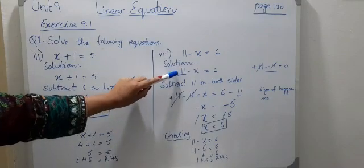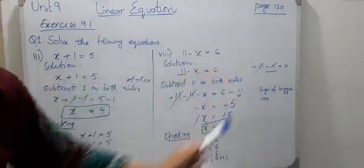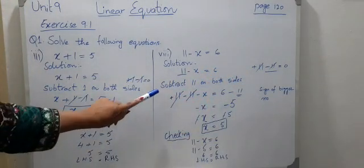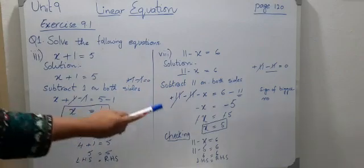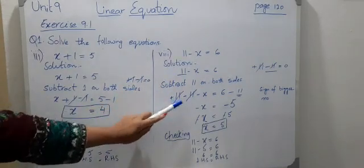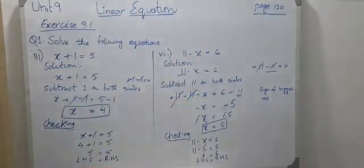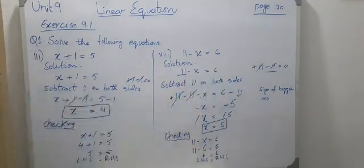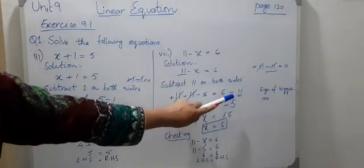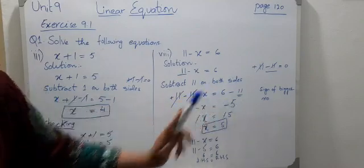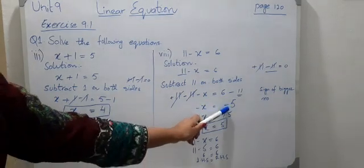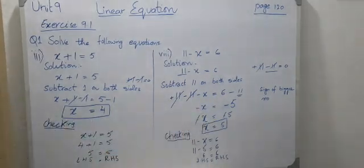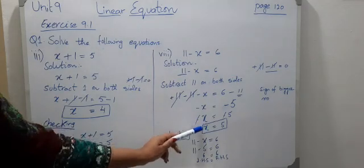Subtract 11 on both sides. Then 6 minus 11: the sign of the bigger number — bigger number is 11, sign is minus, so minus x equals minus 5. The two minuses cancel each other, giving x equals 5. We put this value in the main equation and the left hand side equals the right hand side.